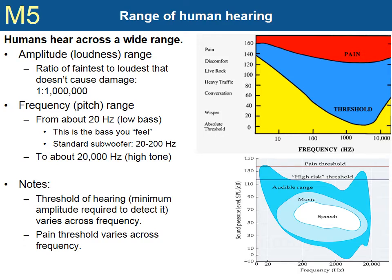The human auditory system is sensitive to an incredibly wide array of sounds. We can consider range along two dimensions: amplitude and frequency. For amplitude, the range of faintest to loudest sounds that we can hear without causing damage to our ears is a ratio of 1 to 1 million. For frequency, the range is also very wide, from about 20 hertz — that is, 20 cycles per second — to about 20,000 hertz.